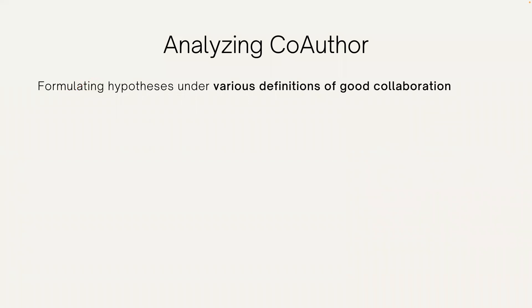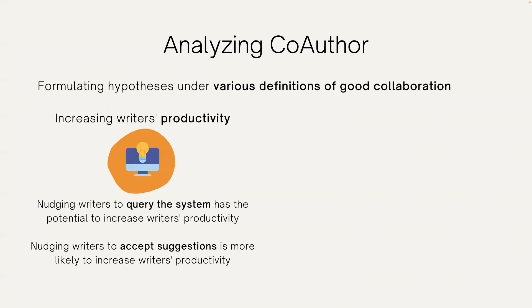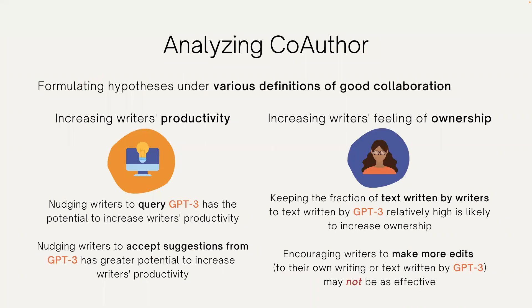Lastly, we showed that designers can use Co-Author to find preliminary evidence for formulating hypotheses under various definitions of good collaboration. For example, a designer who wants to increase writers' productivity may find that a number of factors in Co-Author positively correlate with the amount of text the writers and GPT-3 end up producing. Likewise, a designer who wants to increase writers' feeling of ownership may use the ownership scores in Co-Author to assess potential correlation between the scores and other factors, such as the proportion of text written by writers and the number of edits writers made.